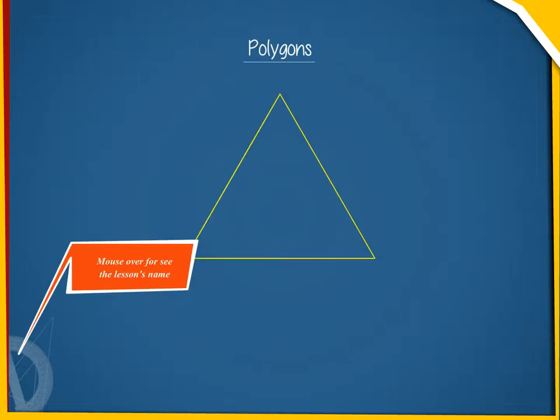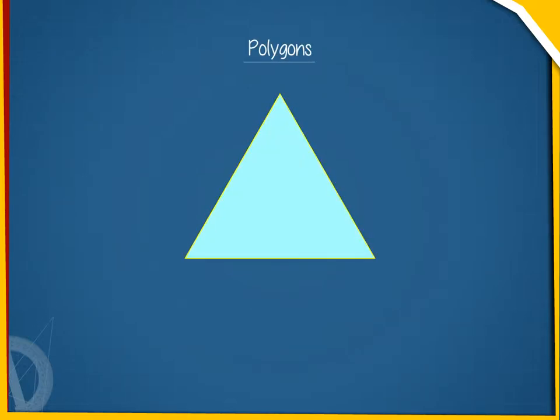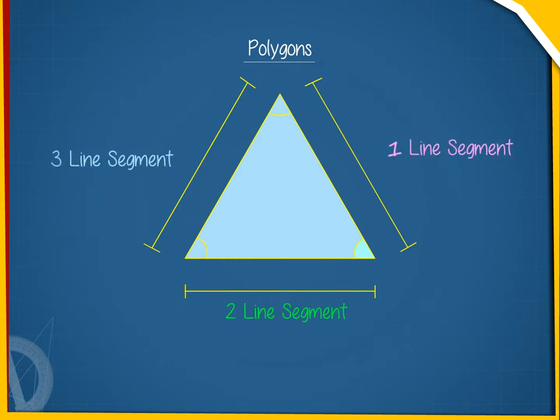Polygons. A simple closed shape made up of at least three line segments is called a polygon.